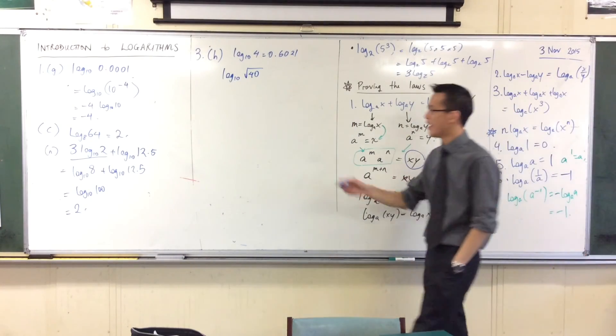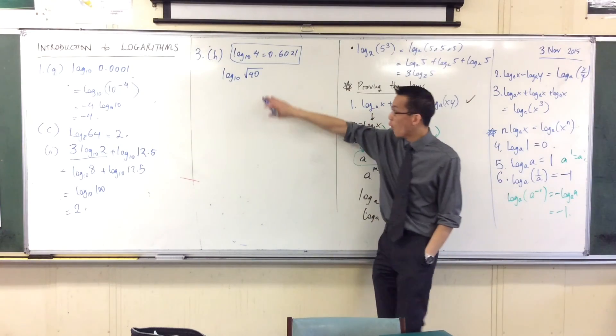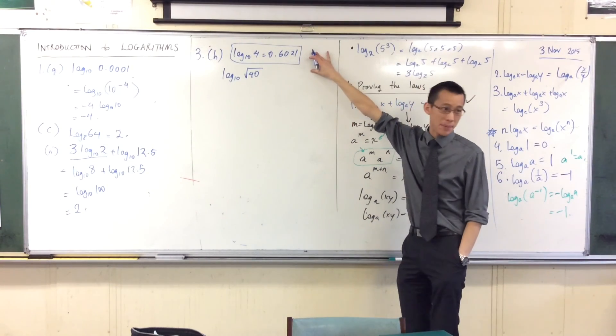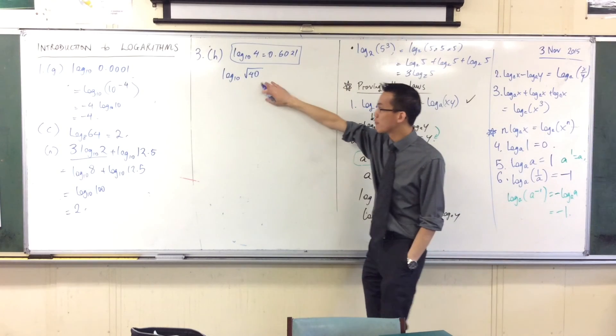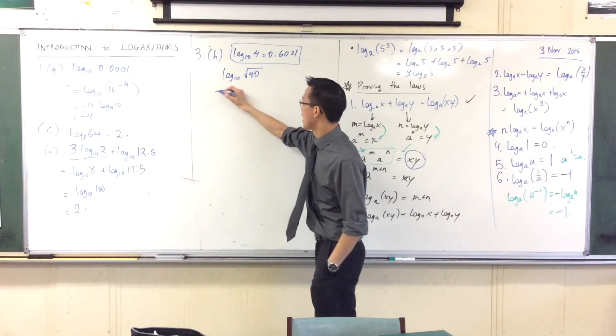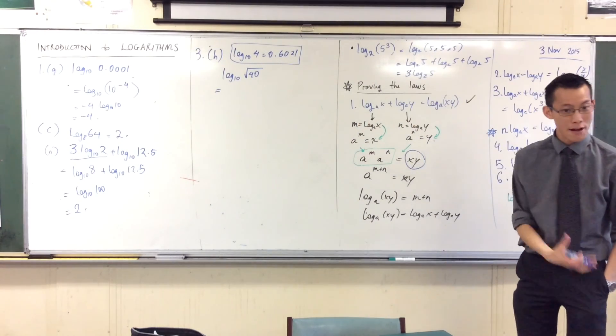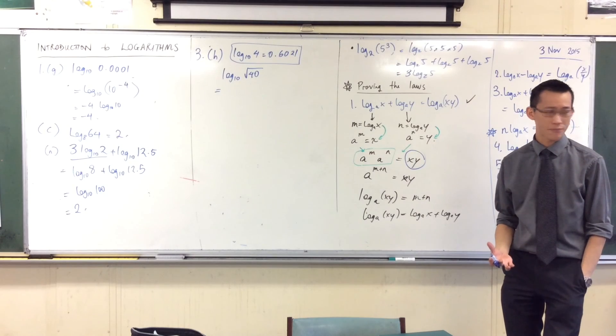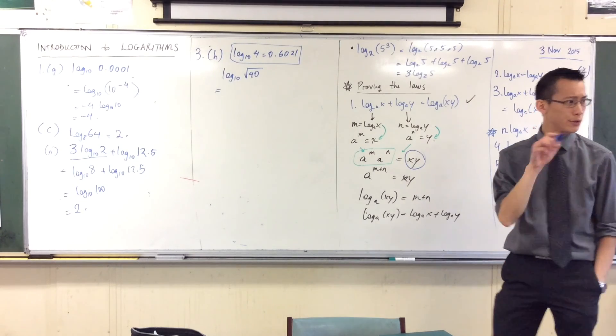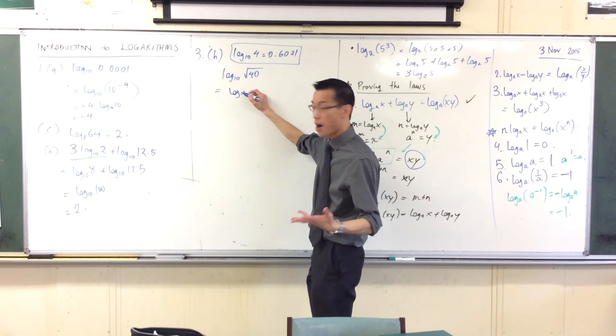Whenever you get asked to solve something, and they tell you a piece of information, what you want to do is get what you've got in terms of that piece of information. If I can rewrite this, something like this, then I'll be okay. So, for starters, let's have a look at this thing. Square root of 40, that's a bit gross. How can I rewrite that in index form? What index is the square root? Power of what? It's the power of a half.